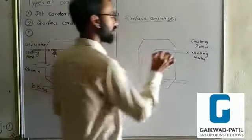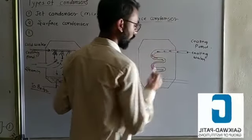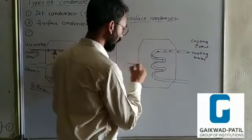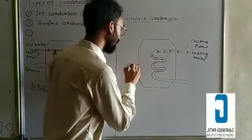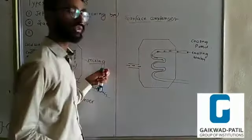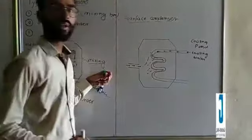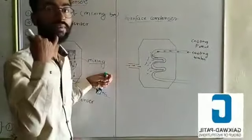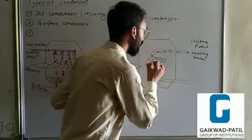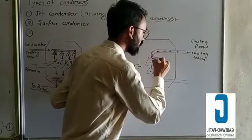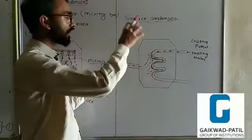When we flow the cooling water from this tube, the cooling water will flow through the tube. If your steam is coming from the exit of the turbine, the inlet steam comes in here. The steam will flow over the surface of the tube and decrease in temperature.